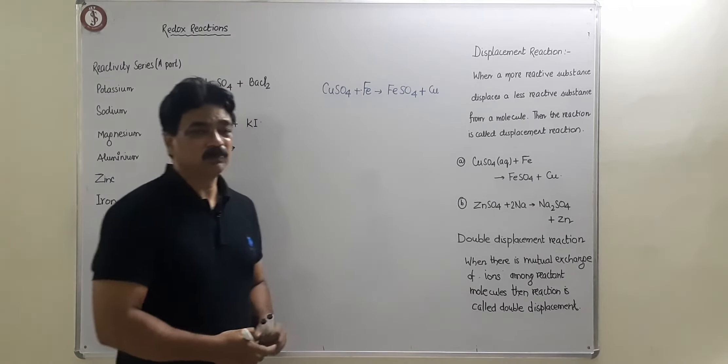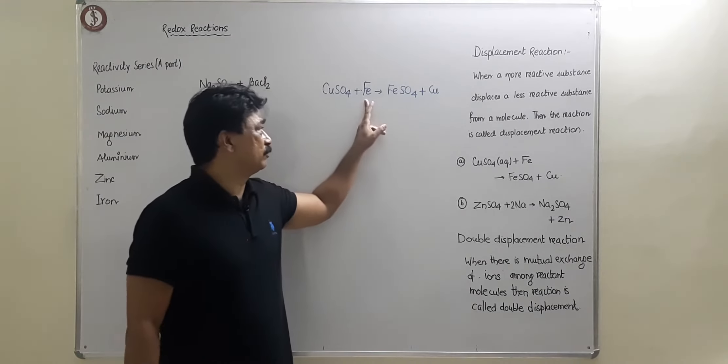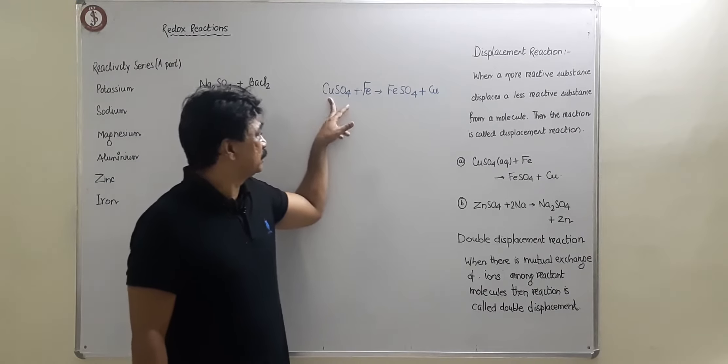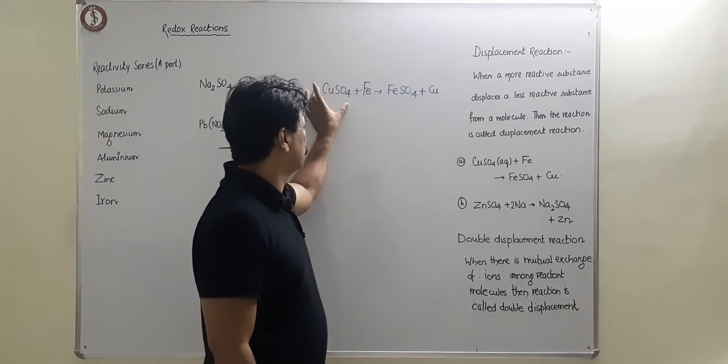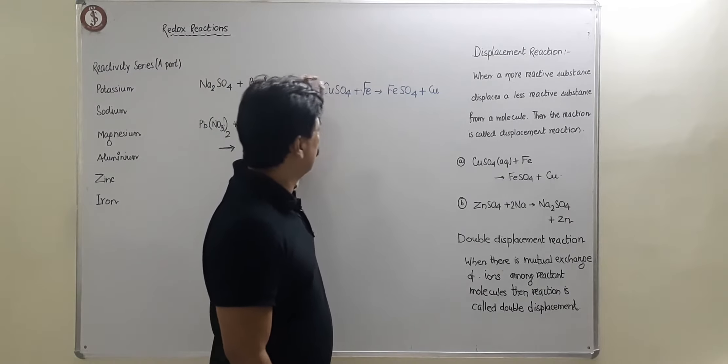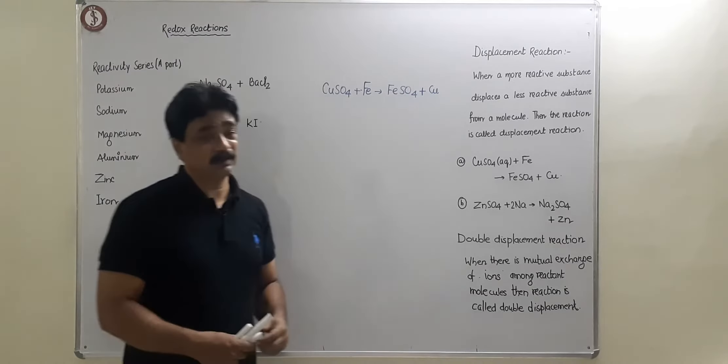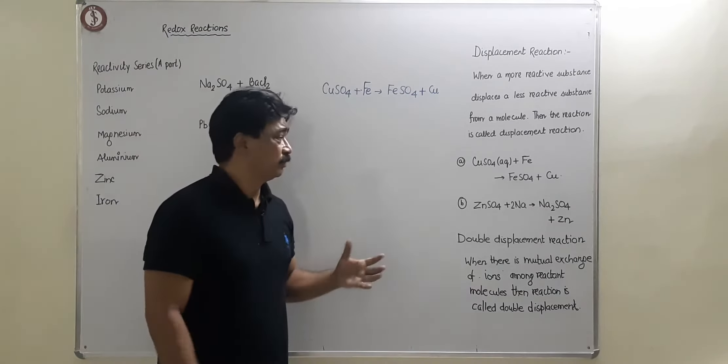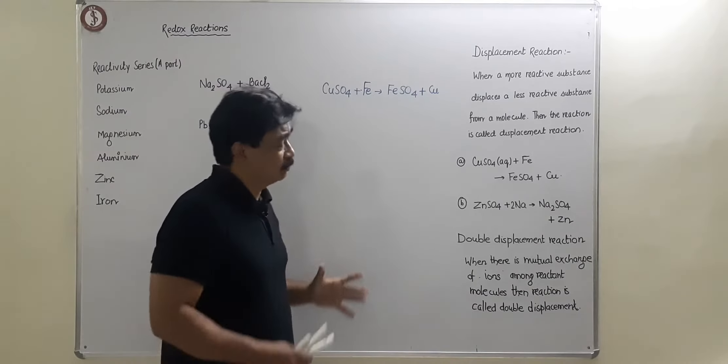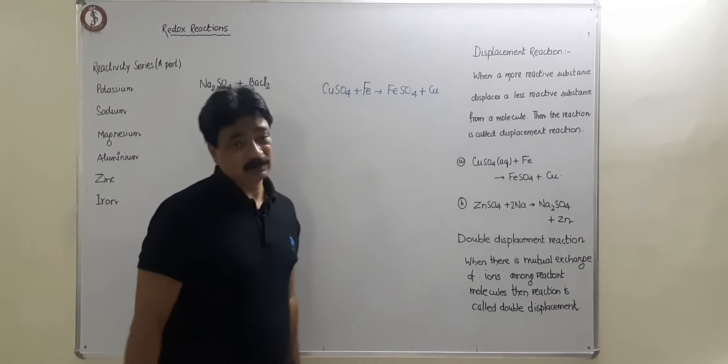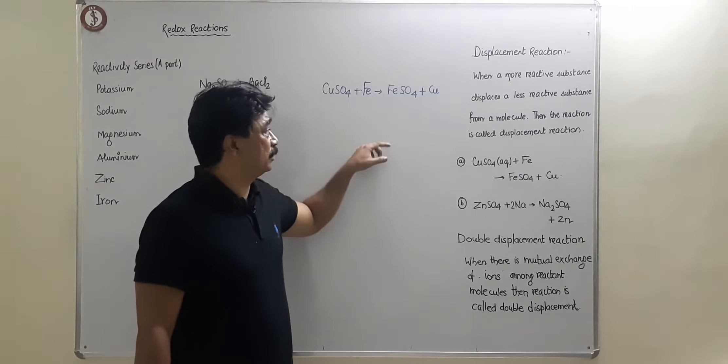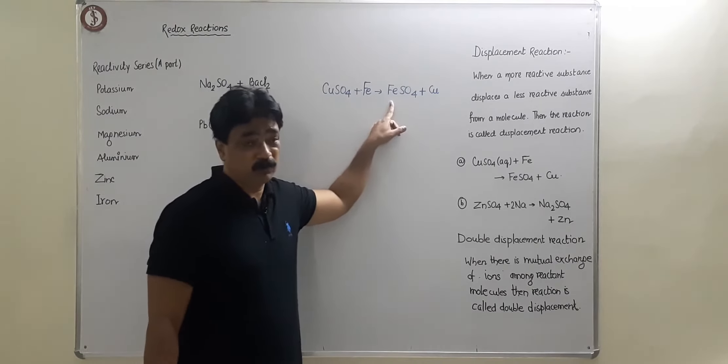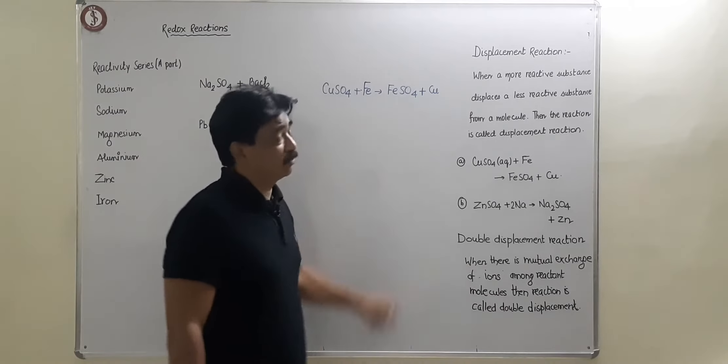This reaction is called displacement reaction. When a more reactive substance displaces a less reactive substance from its molecule, so copper from copper sulfate molecule, iron could replace. So Fe is more reactive than copper.